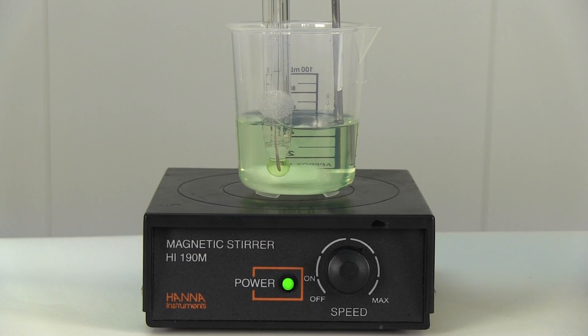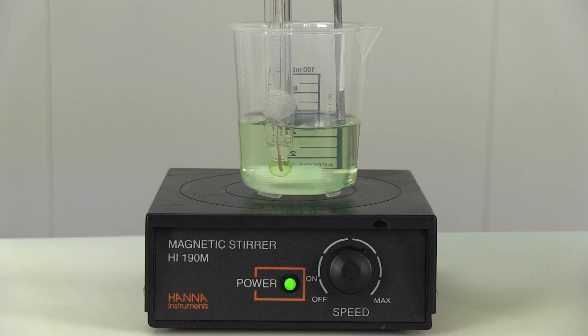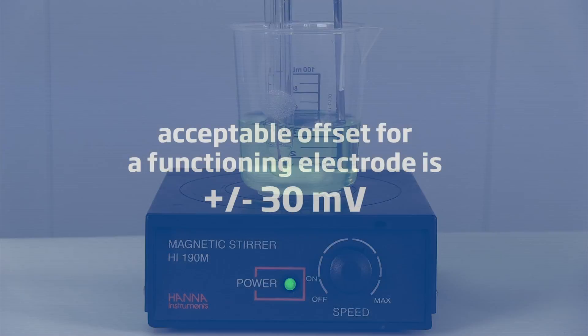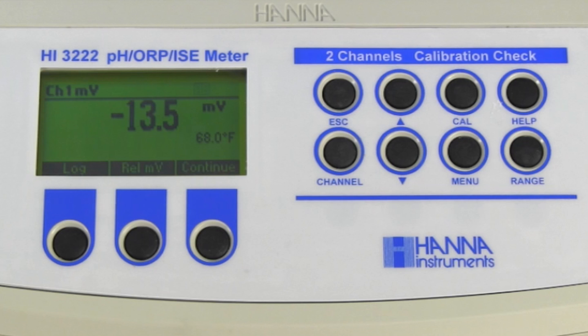To determine the offset, check the millivolt reading of the pH electrode in a pH 7 buffer. An acceptable offset for a functioning electrode is plus or minus 30 millivolt. We see that our HI1131B has an offset of negative 13.5 millivolt.